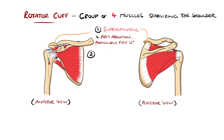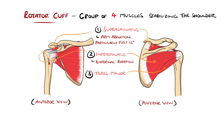I for infraspinatus, involved in external rotation of the arm as well as adduction. T for teres minor, also involved in external rotation of the arm as well as adduction.